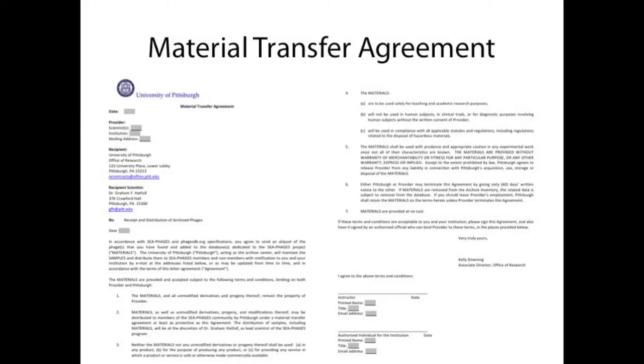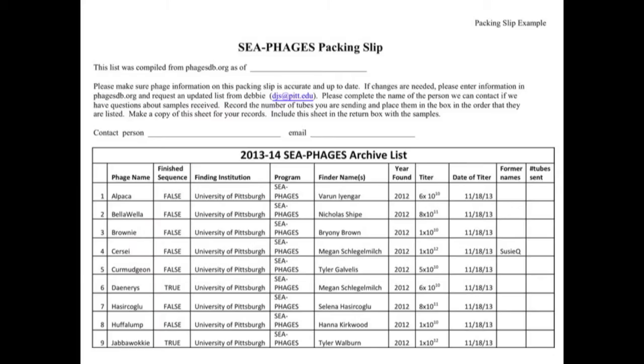There are two major forms of documentation in this process. The first, the material transfer agreement, must be completed before any transfer of materials or reagents can happen between your university and the University of Pittsburgh. The second documentation form, the packing slip or phage list printout, is a pre-populated document that is generated based on data you entered into phagesdb. If there are any blank columns, you will need to fill them in and include this slip with your return package.